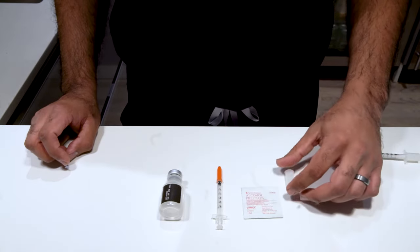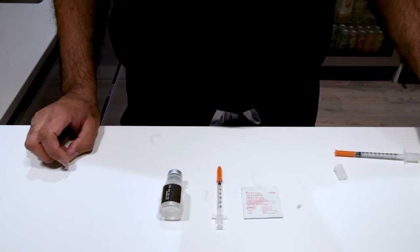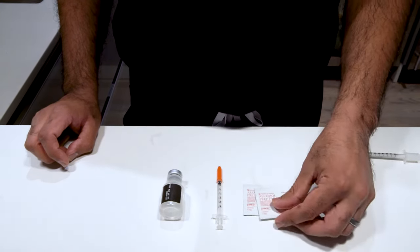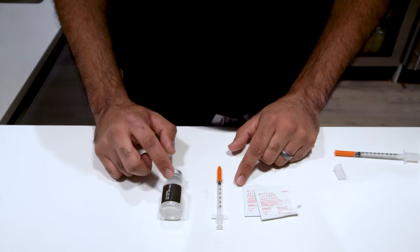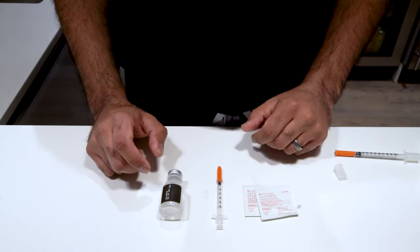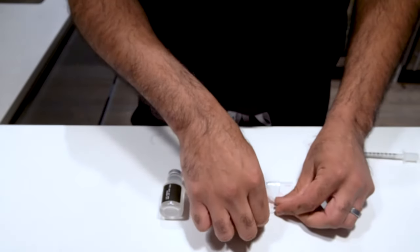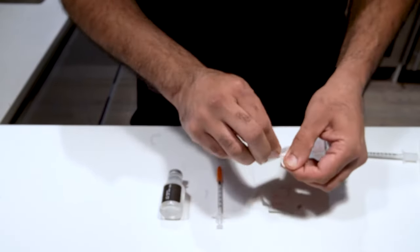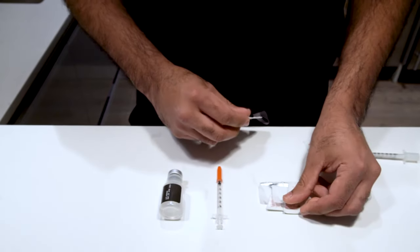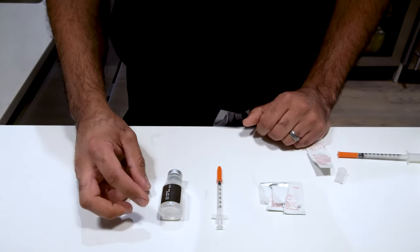Second, you're going to get some alcohol pads. You can get one or two alcohol pads depending on how you like your injections. We use one to clean the bottle and one to clean our skin. When you get your alcohol pads, go ahead and open these up, get them ready such that they're easy to reach out to, just like this.